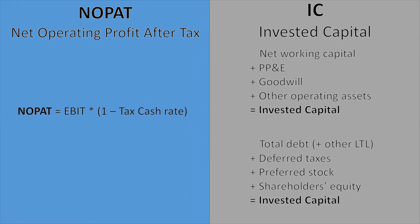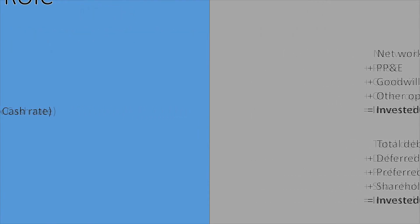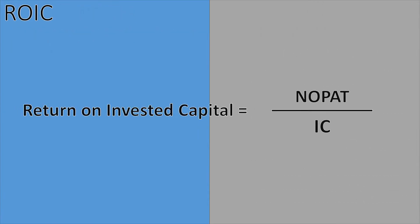Now, after we have discussed the inputs for the return on invested capital calculation, let's discover how the actual formula looks. As you can see, the formula is not really complicated. It's just NOPAT divided by Invested Capital.